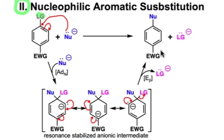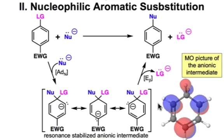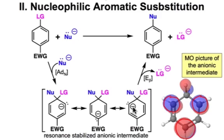Now we're all set up to do a β-elimination. Using this lone pair, we'll kick out the leaving group and make the substitution product. Looking at the molecular orbital diagrams of this anionic intermediate, the highest occupied molecular orbital shows where the electron density exists. The coefficients are largest on the three atoms that bear the negative charge in the resonance forms, matching the locations of electron density in the HOMO.